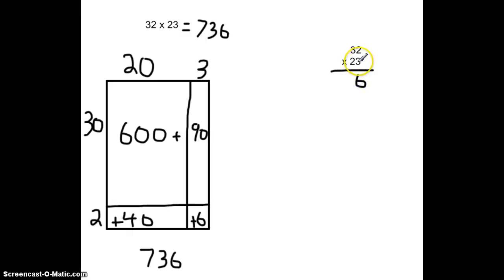We can say 3 times 3. However, this 3 is actually 30, because it's in the tens place. 3 times 30 is equal to 90. So, 90 plus 6 is 96. Or, in other words, 3 times 32 is 96.